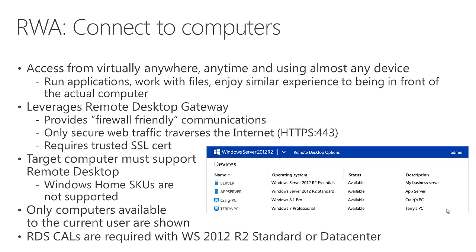It's a little nicer and simpler from an end user's perspective to leverage RD Gateway through RWA. So that's a choice you can make if you're using Standard and Data Center editions — whether to provide users with RDS CALs to take advantage of that, or whether to just use VPN connections with RDP to connect to desktops. Either one works in similar ways, just a slightly different user experience.